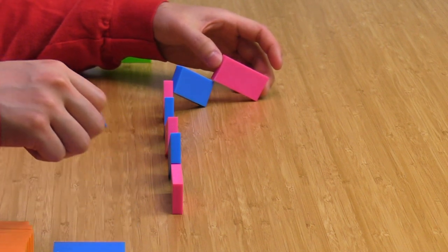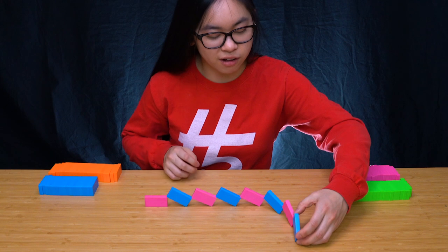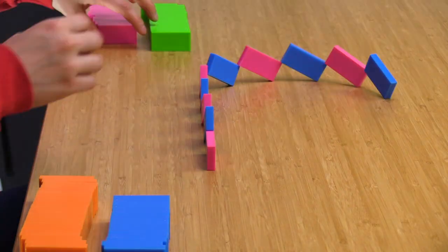Now make sure when you're putting the dominoes in the curve, it's not too sharp of a turn, otherwise it could potentially fall off by accident. So just very slight angles.